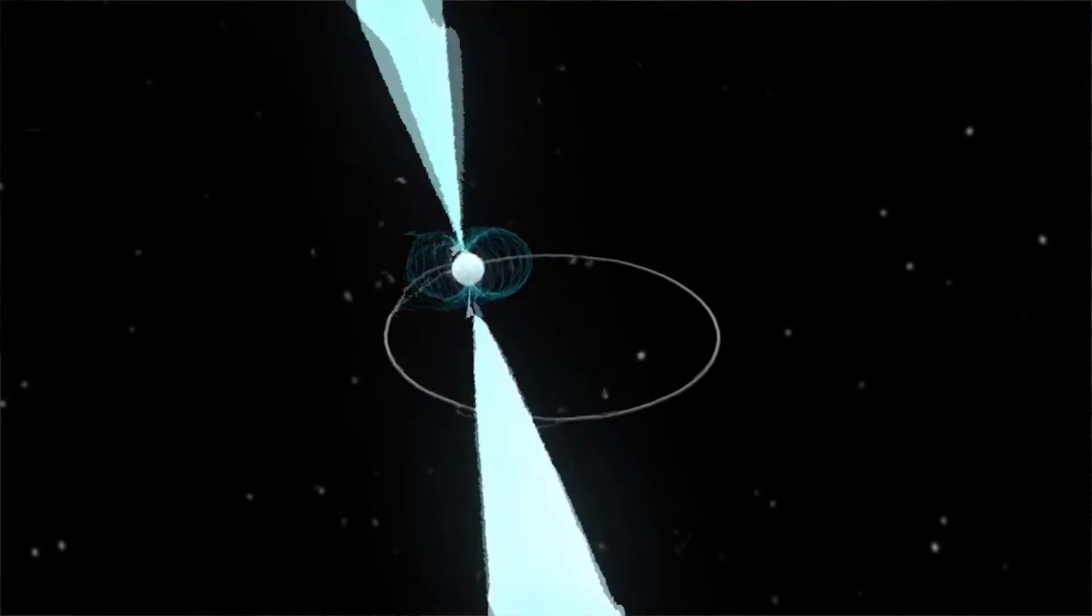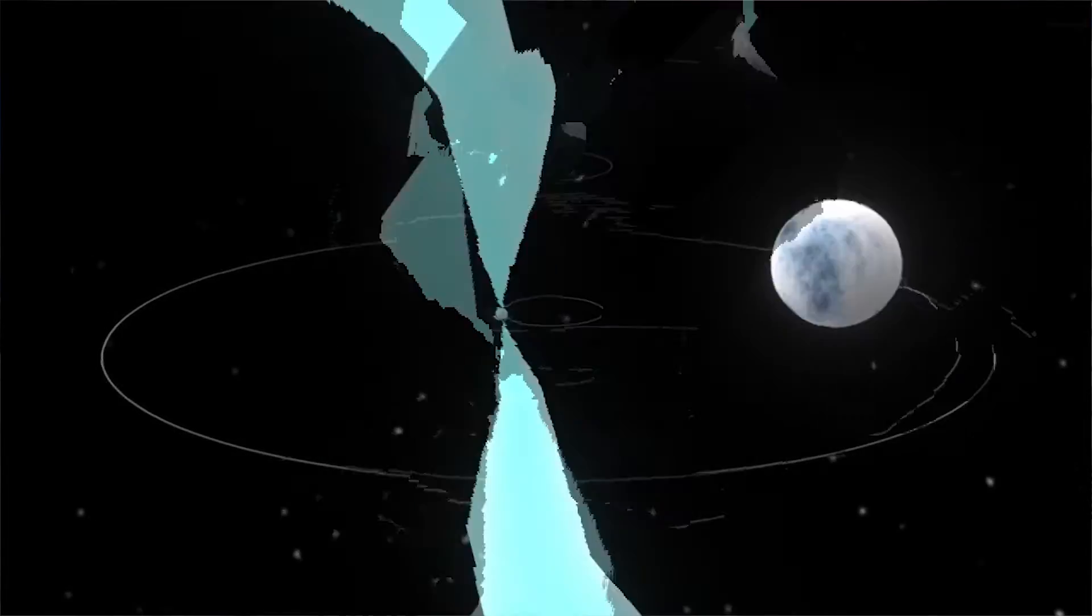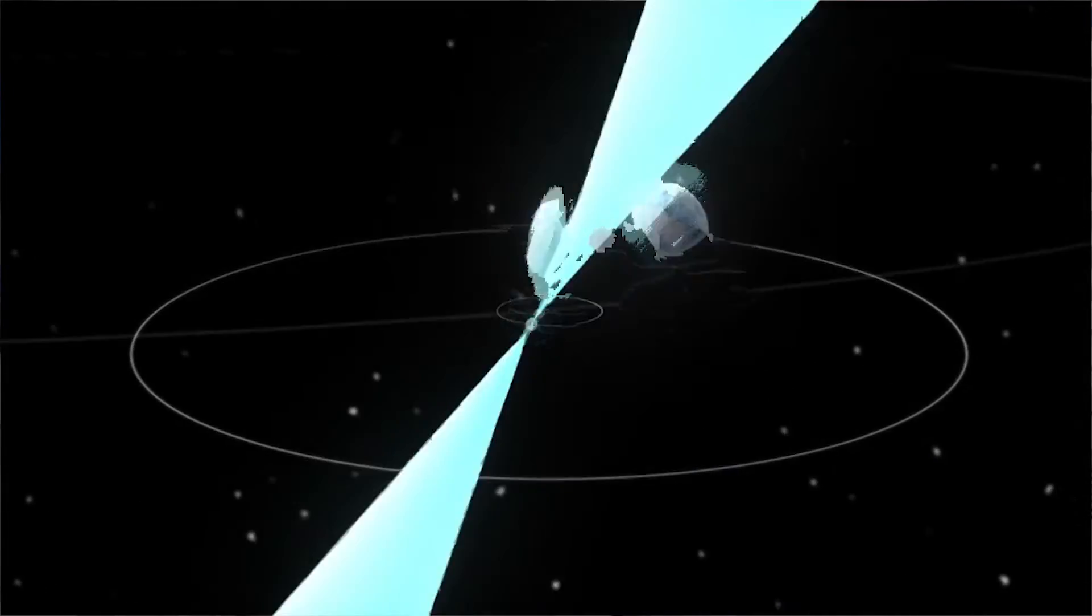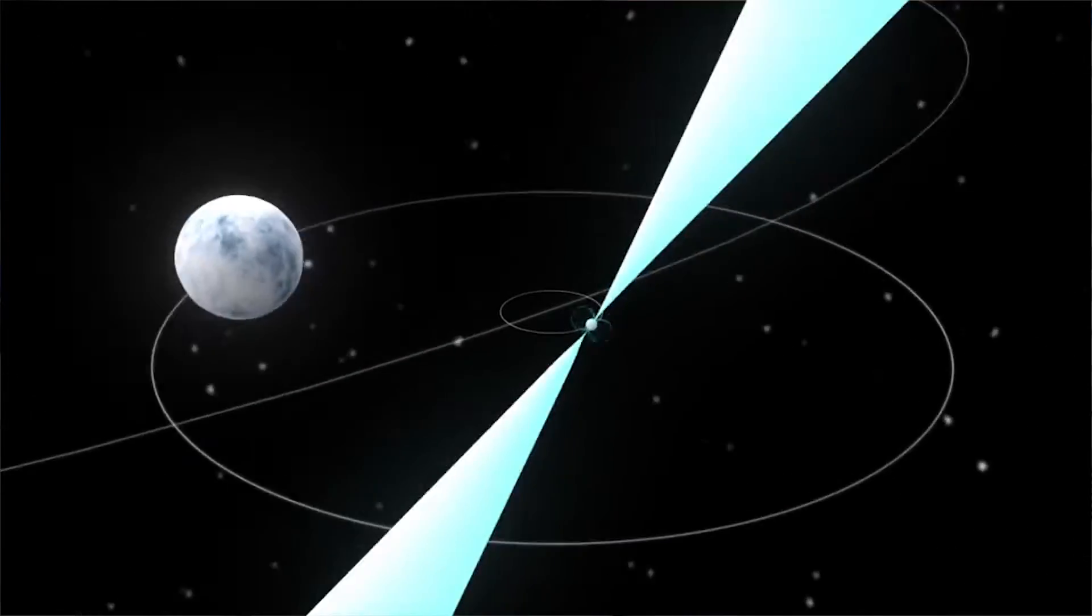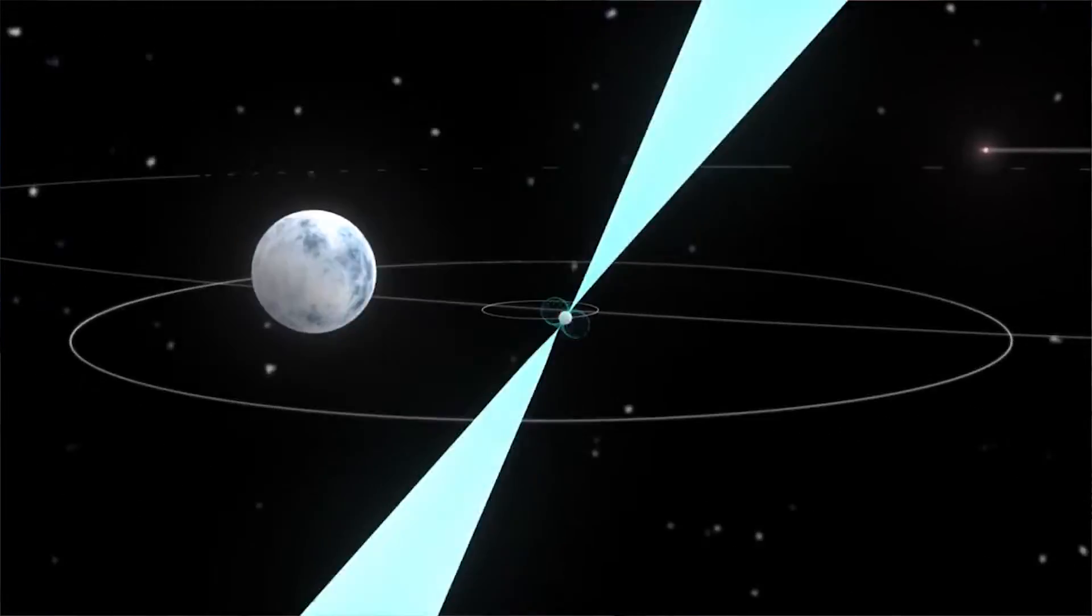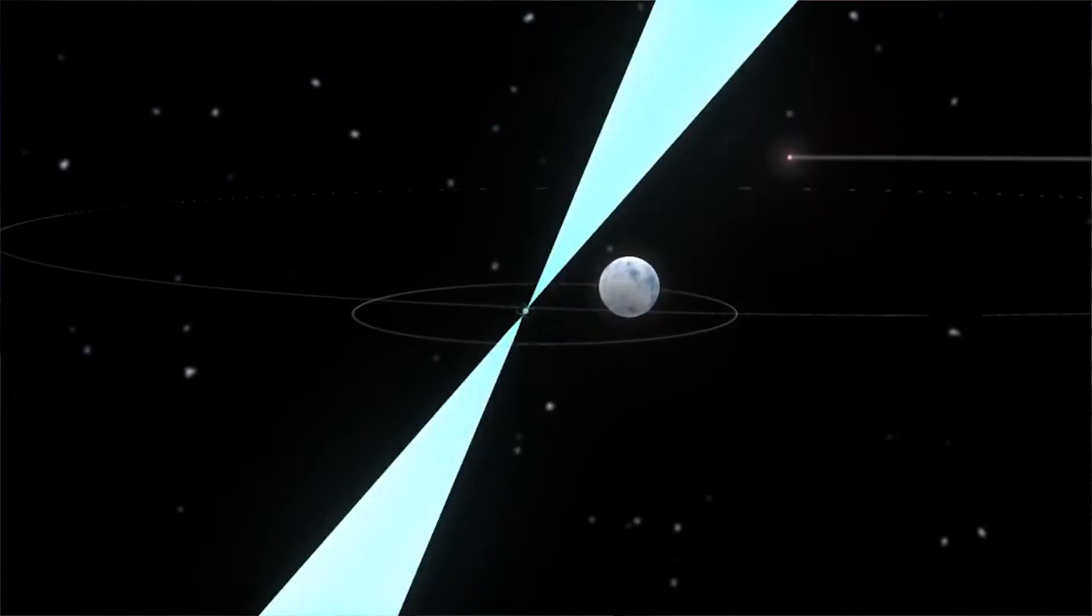This is a pulsar, one of these astrophysical lighthouses that rotates with the precision of an atomic clock, in a system with two other stars that are all orbiting each other and gravitationally attracted to each other, which is a really cool physics laboratory.